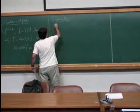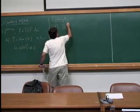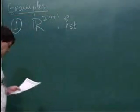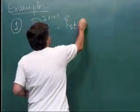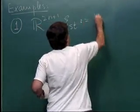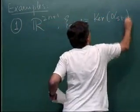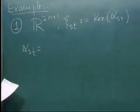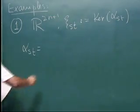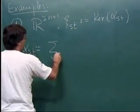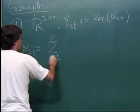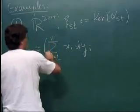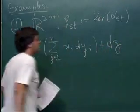The first example is R^(2n+1) with its standard contact structure, which is globally defined as the kernel of a one-form alpha standard, written in the standard form in coordinates x_i, y_i, and z.